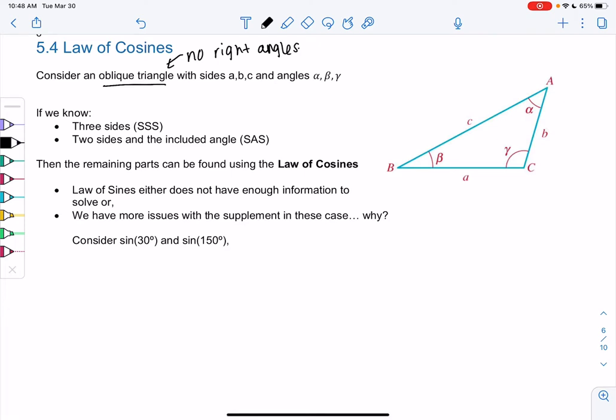So we have sides a, b, c and angles alpha, beta, gamma, or I'm okay if you use capital letters A, B, C.